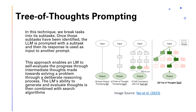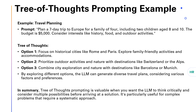Tree of Thoughts prompting presents the LLM with a branching structure, allowing it to explore multiple options and converge on the most suitable path based on the prompt's constraints. It is most effective when the problem has multiple potential solutions, you want to explore different paths or perspectives, the task requires reasoning and decision-making, or you want to improve the comprehensiveness and creativity of the LLM's output.